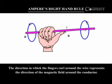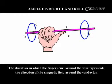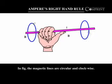The direction in which the fingers curl around the wire represents the direction of the magnetic field around the conductor. In the figure, the magnetic lines are circular and clockwise.